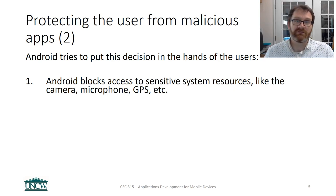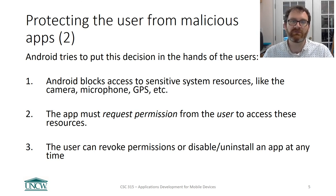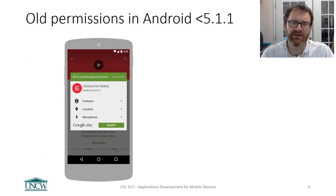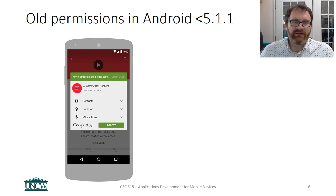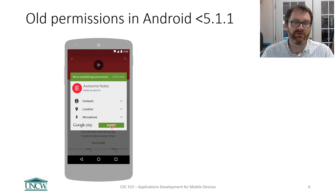So how does Android try to protect users from malicious apps? They try to put the decision of what is malicious in the hands of the user. By default, Android will block your app from accessing sensitive things like the camera, microphone, and GPS, and requires that the app request permission from the user to access such resources. The user can revoke or disable those permissions at any time. This wasn't always the case. Back in Android 5.1.1 — early 2015 — you had a model where when you installed an app, it requested all the permissions it would ever need, you accepted it as a blanket statement, and it was done. For the rest of the time the app was installed, it had access to all those things. If you denied it, you simply could not install the app.